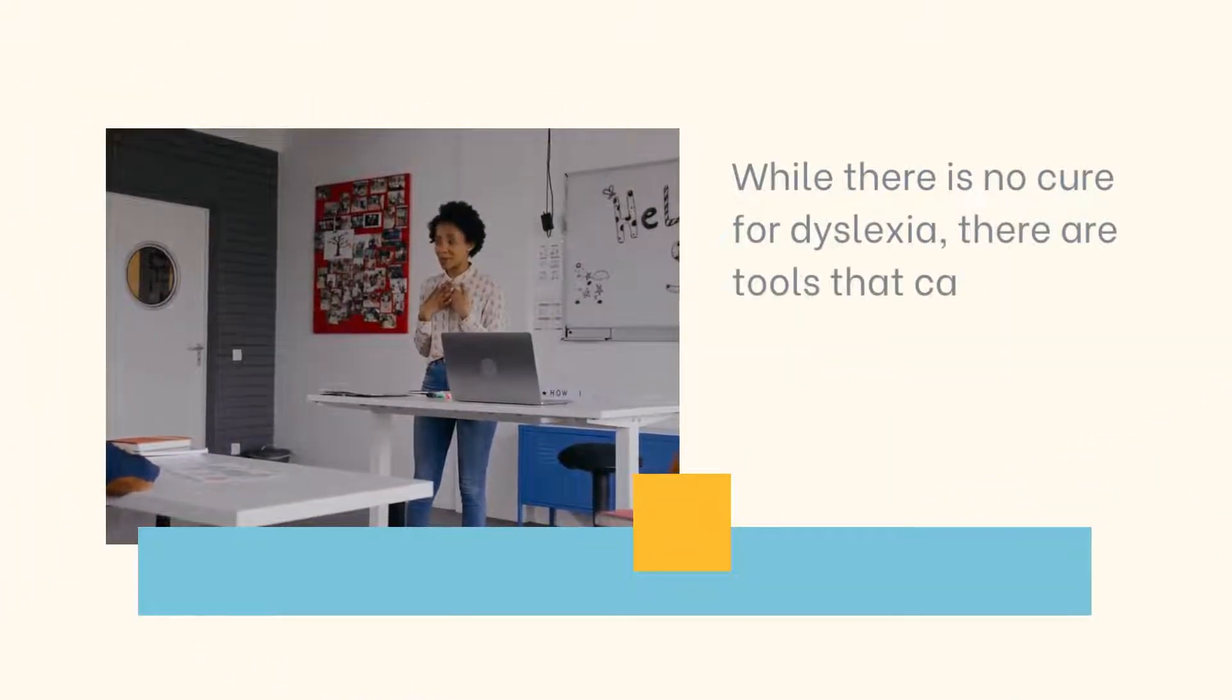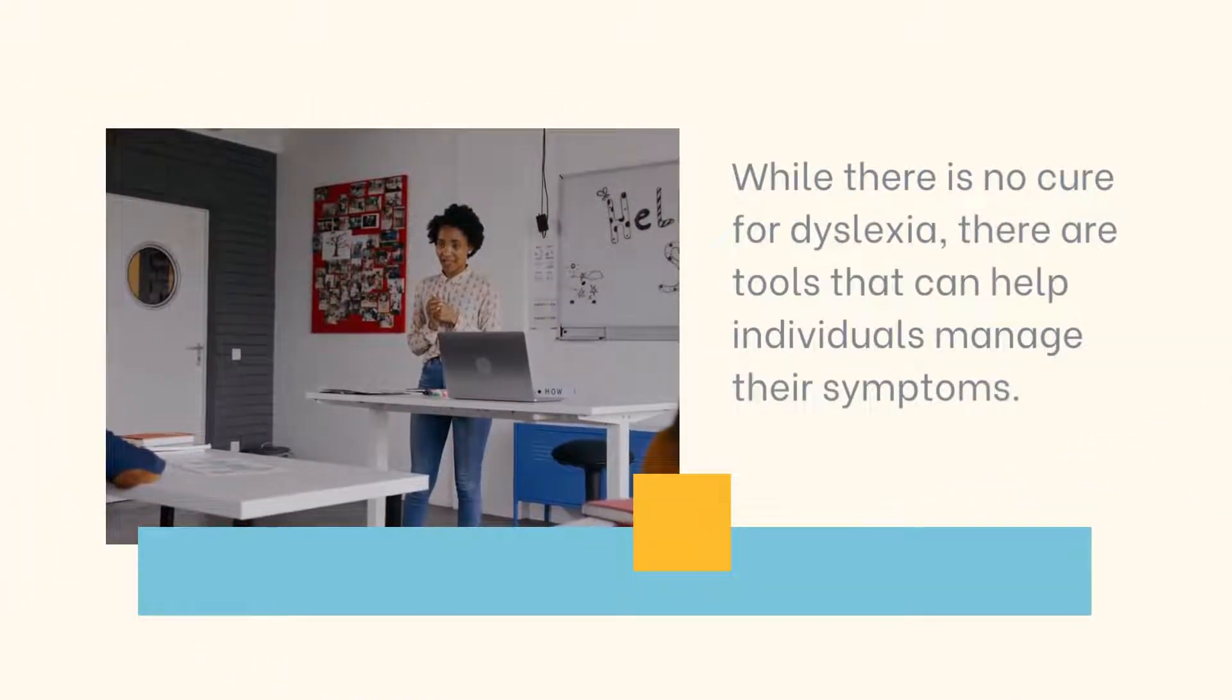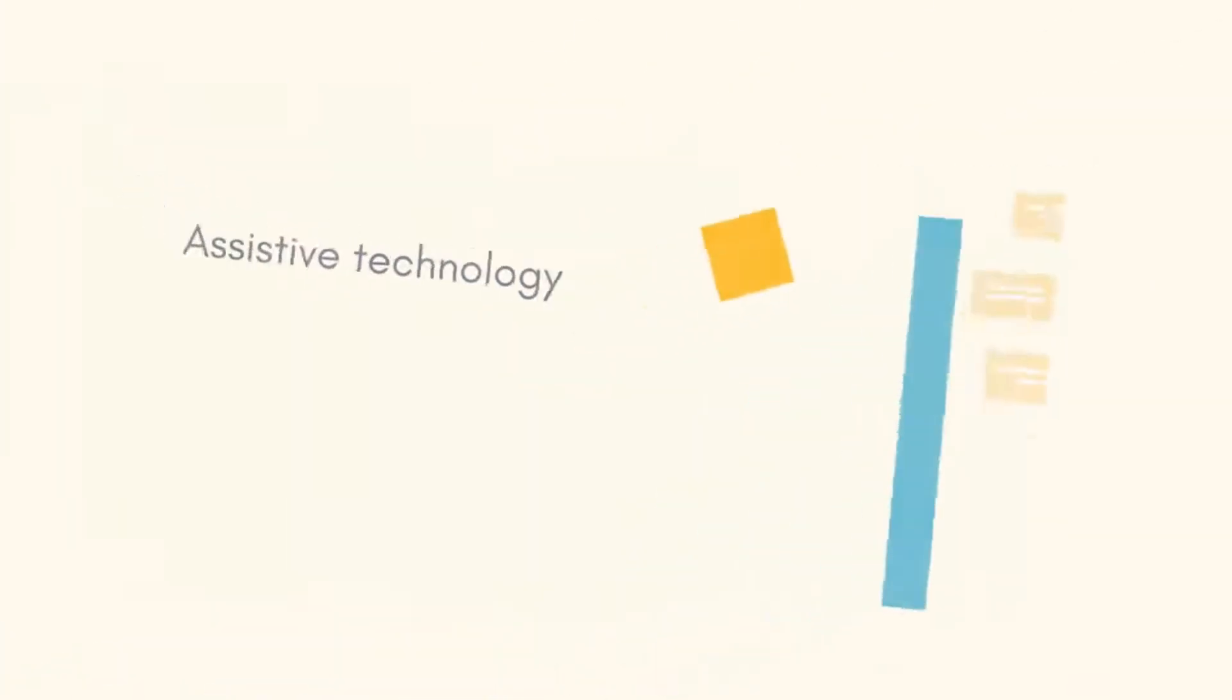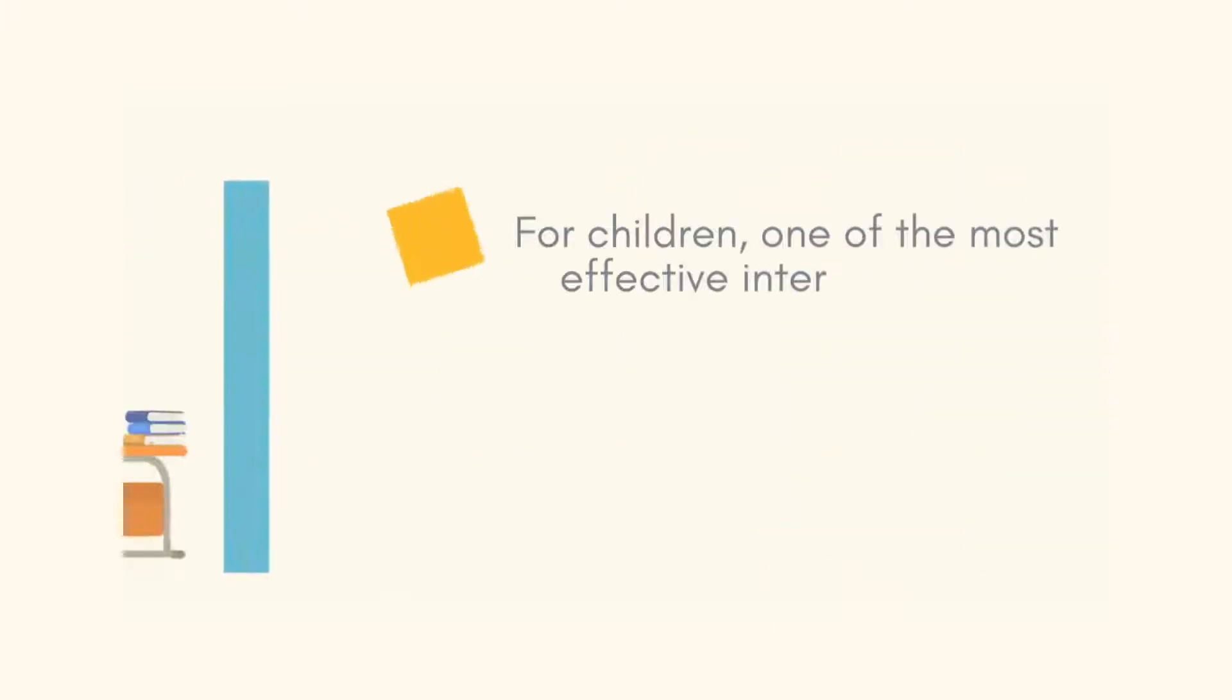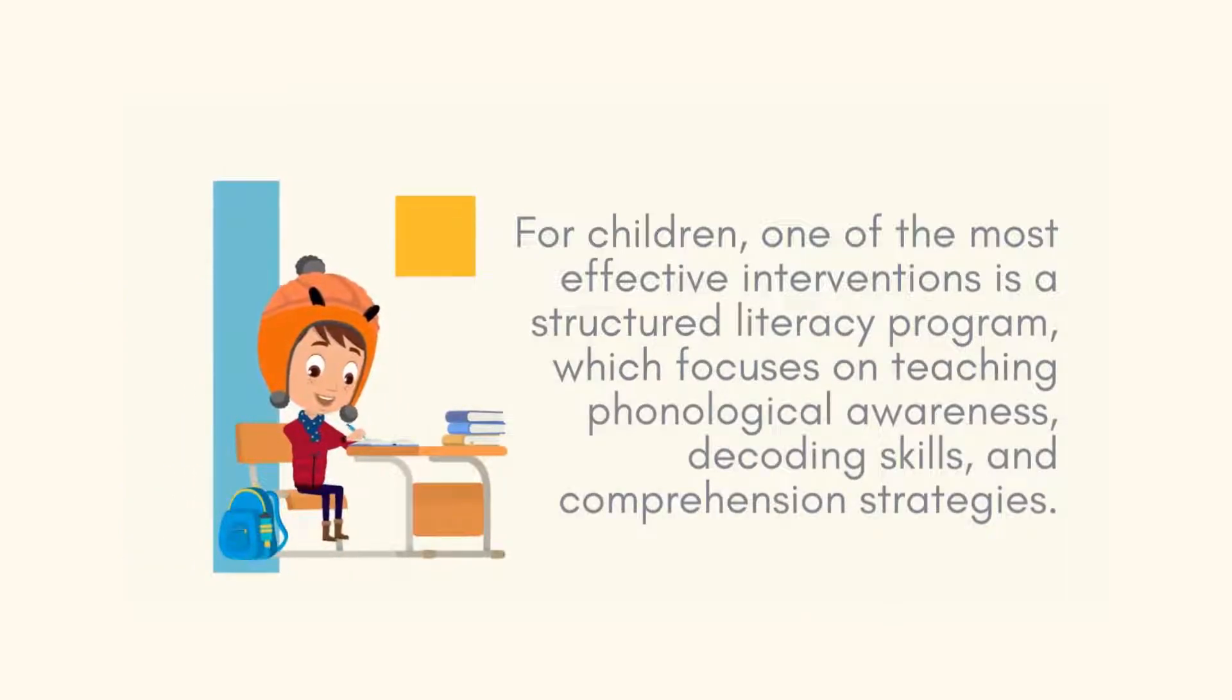While there's no cure for dyslexia, there are tools that can help individuals manage their symptoms. Assistive technology such as text-to-speech software can be very helpful for people with dyslexia. For children, one of the most effective interventions is a structured literacy program which focuses on teaching phonological awareness, decoding skills, and comprehension strategies.